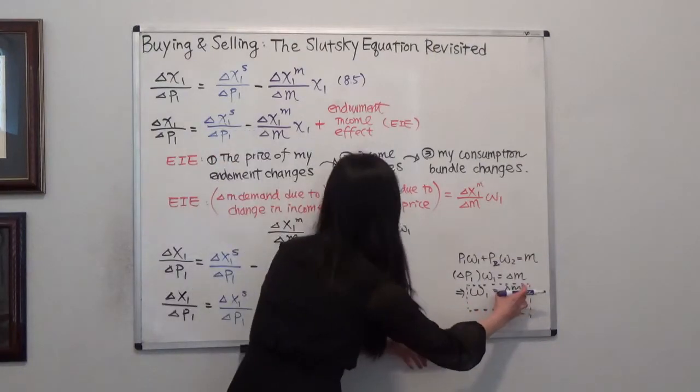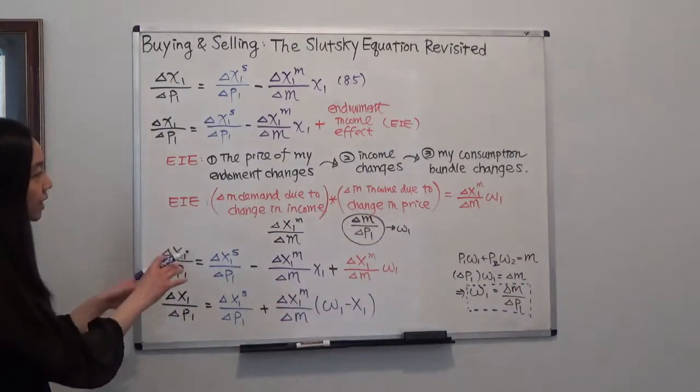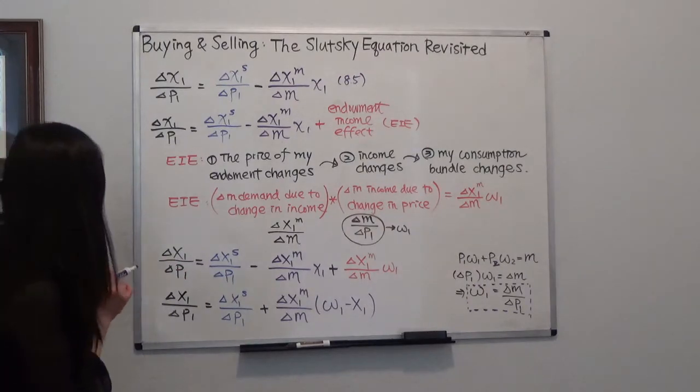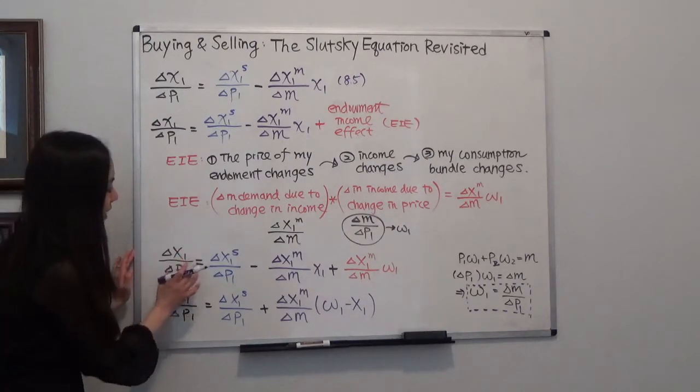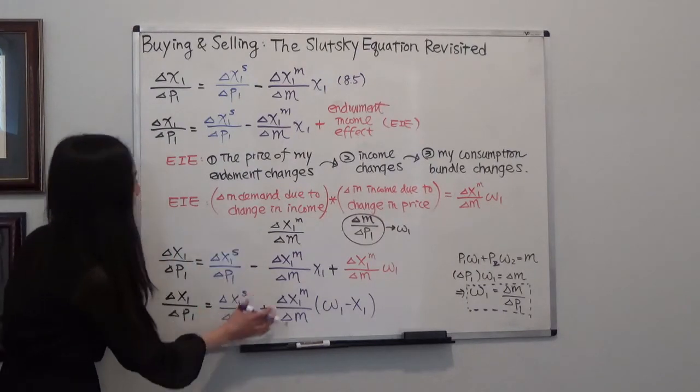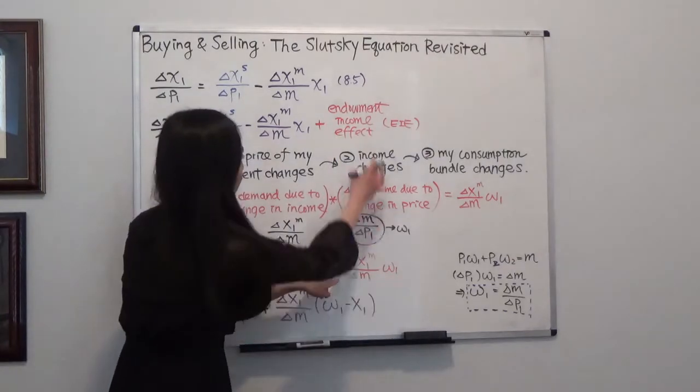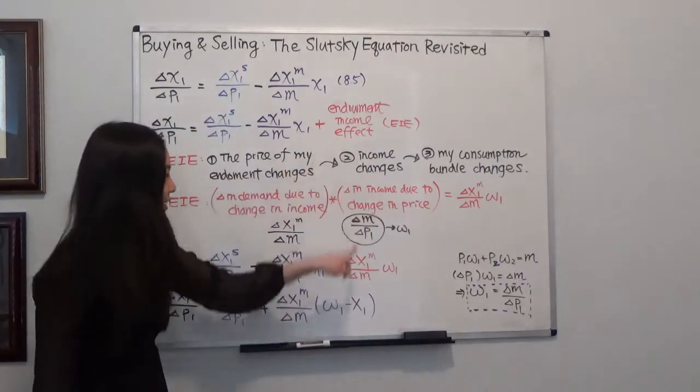So I can put this term back here. So you can see that I can rewrite my Slutsky equation. So here is the total effect that is equal to our substitution effect. And here I'm just writing everything the same way.